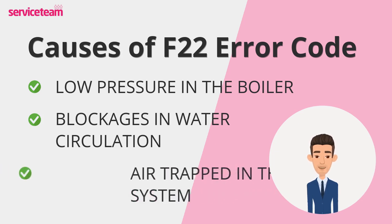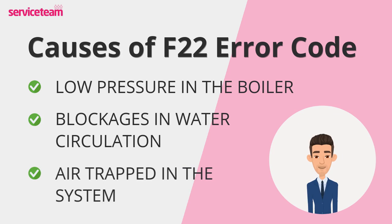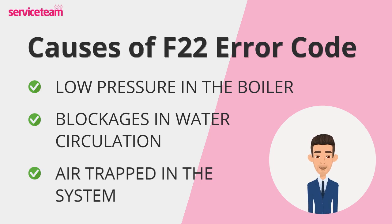Trapped air in the system can also cause the F22 fault. Air bubbles in the pipes can disrupt water flow and pressure. This often happens after bleeding radiators or if there's an airlock in the system. The boiler may register low pressure because of this air, resulting in the F22 error code.